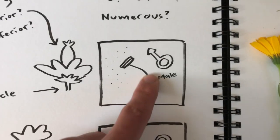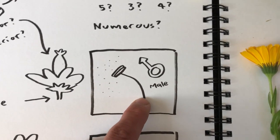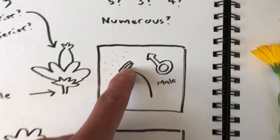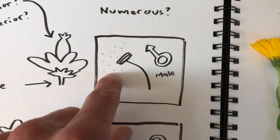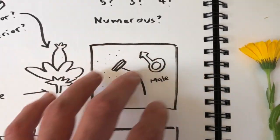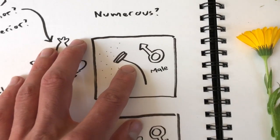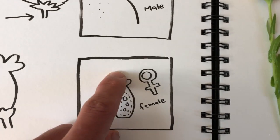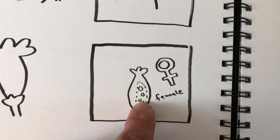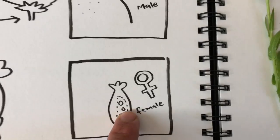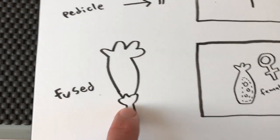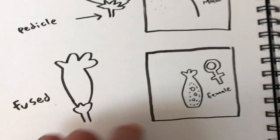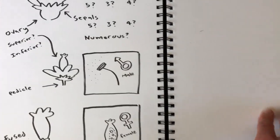Next we want to understand what the male parts look like. The male parts are often these pollen-containing two-lobed structures on a longer stem-like thing called a filament that produce pollen. The female part often has a receptive end and is connected to the ovary that turns into the seeds. Some flowers also have fused petals or fused sepals, and those are the important things to understand about flower structure.